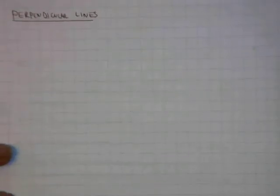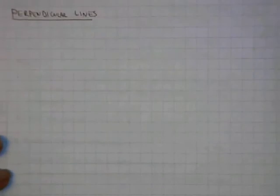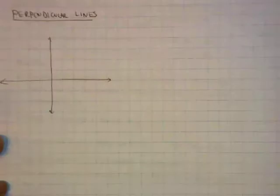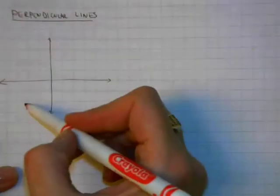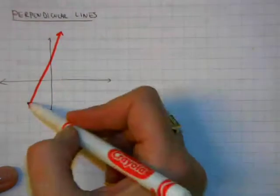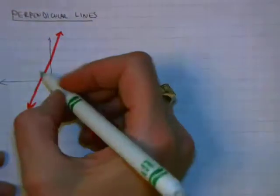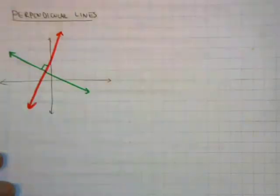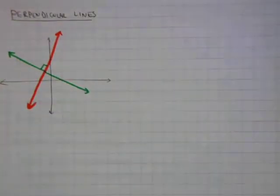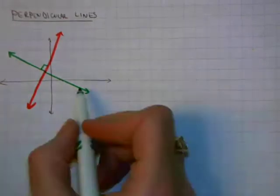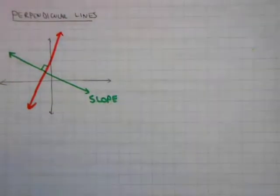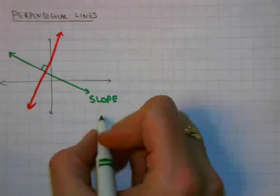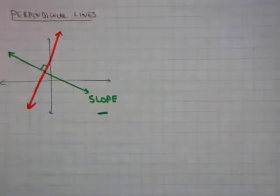For this next segment, you don't need to take any notes — just try to listen and understand. I'm going to draw a coordinate plane and sketch two different lines. Here's one line shown in red, and another line that is perpendicular to it. Remember that perpendicular lines meet at right angles. Let's think about the slopes of these two lines. Look at the line in green — is its slope positive or negative? This is a nice negative slope, coming downhill, so the slope is going to be negative.